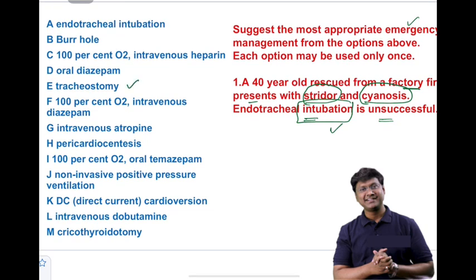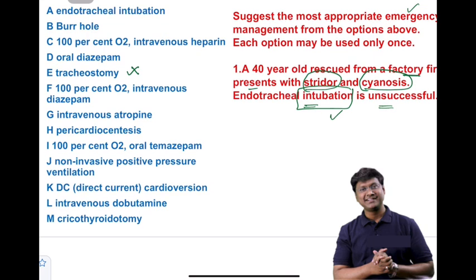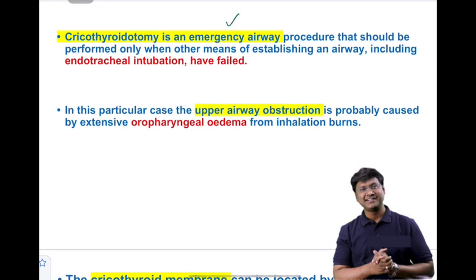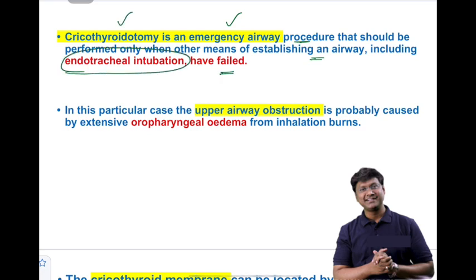However, since endotracheal tube placement into the trachea is unsuccessful, tracheostomy will be of no use. The best answer here is cricothyroidotomy. Cricothyroidotomy is an emergency airway procedure that should be performed only when other means of establishing an airway, including endotracheal intubation, have failed.